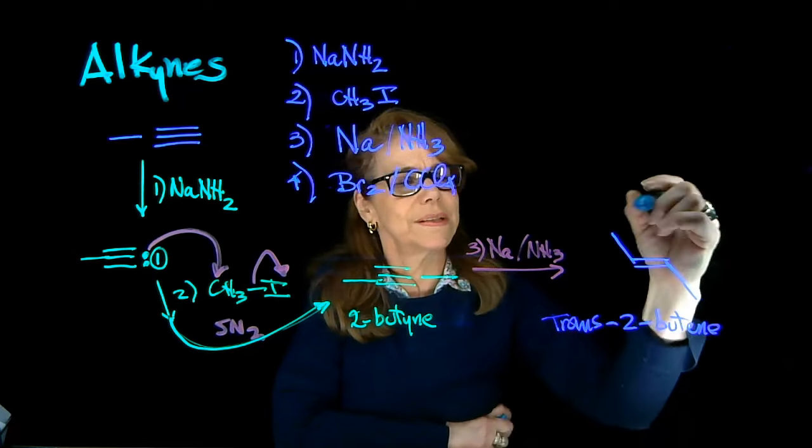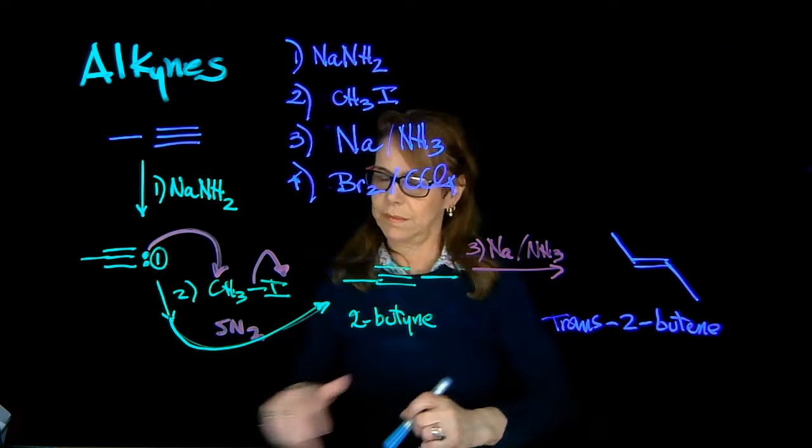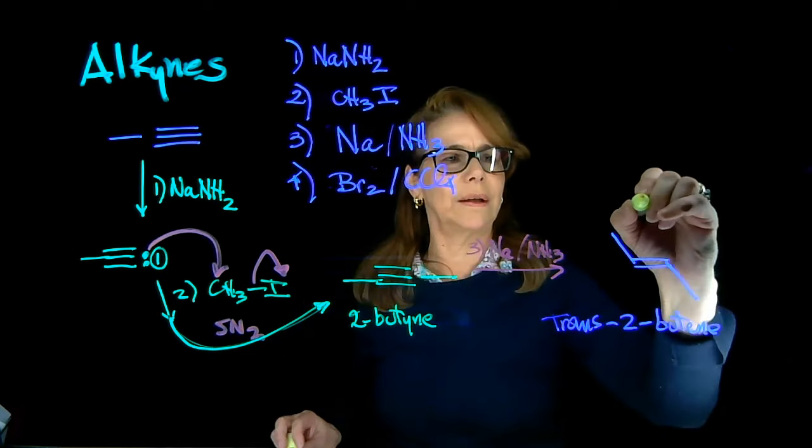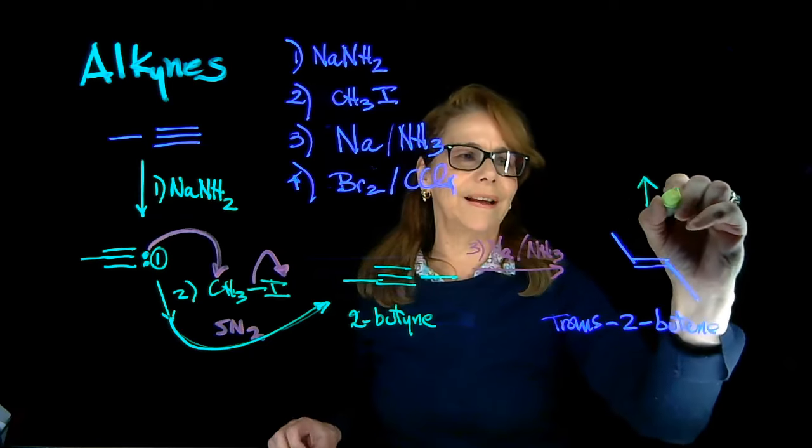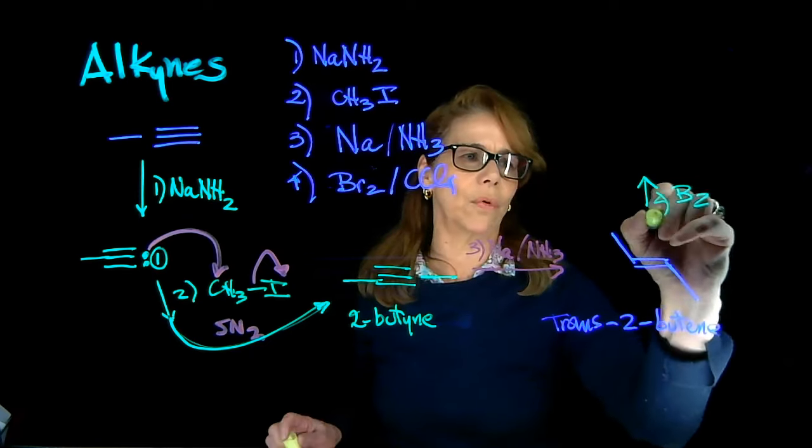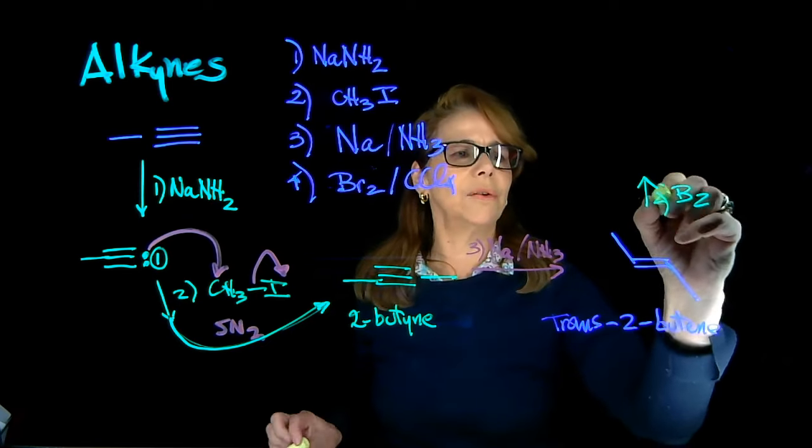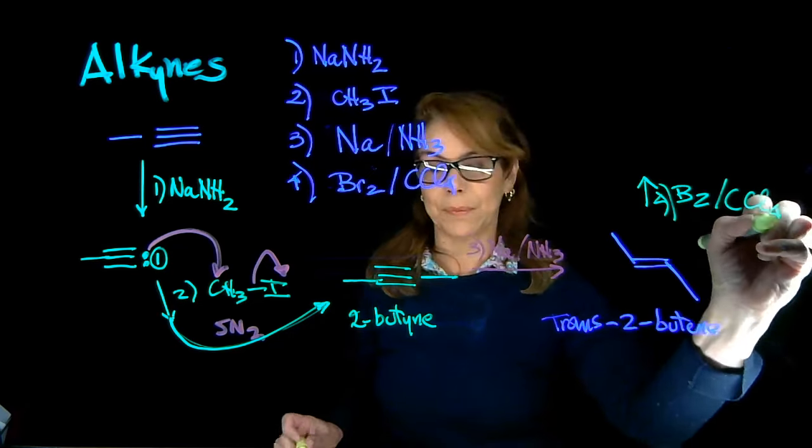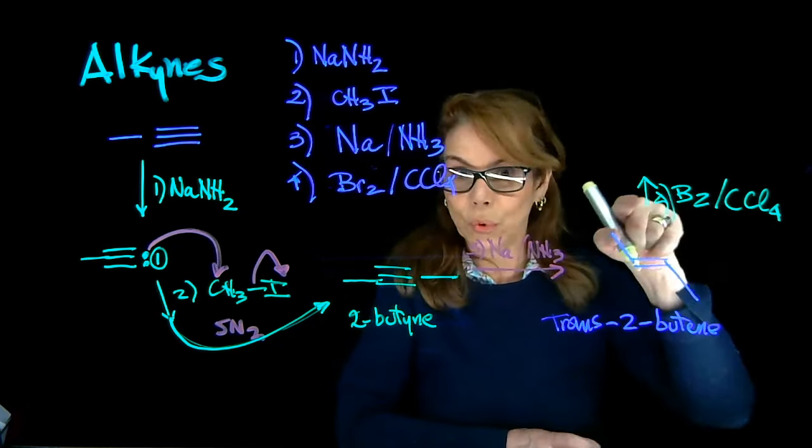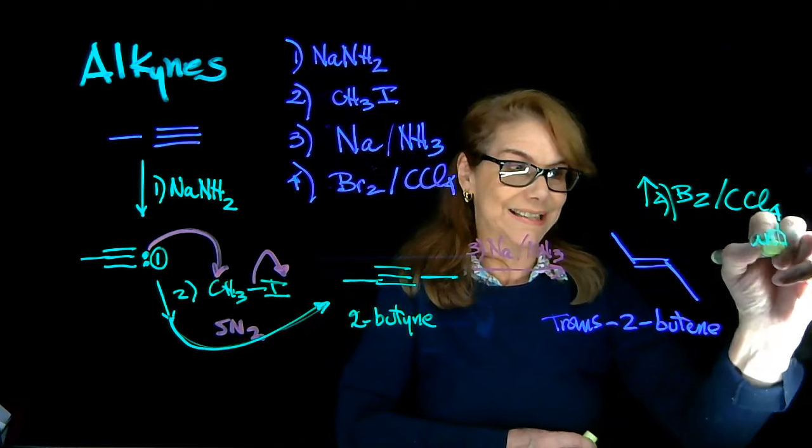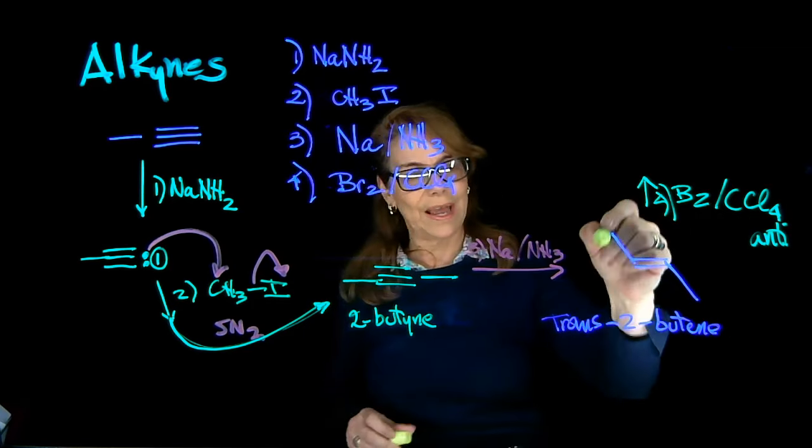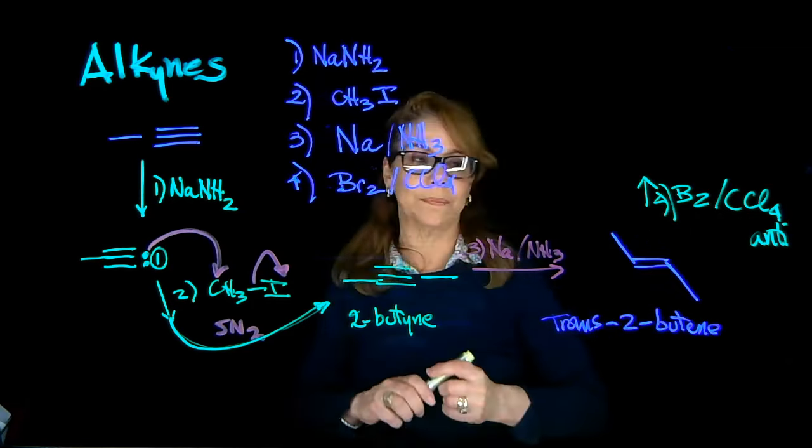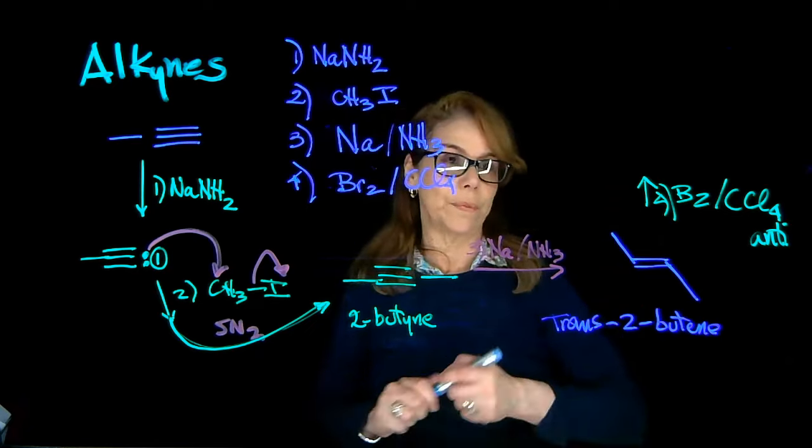Then the fourth step—I'm going to draw it over here. This is a bromination reaction. Step four: the bromination of an alkene. And remember that that proceeds through bromonium intermediate, and that the product is anti. So we're going to add bromine across the double bond.